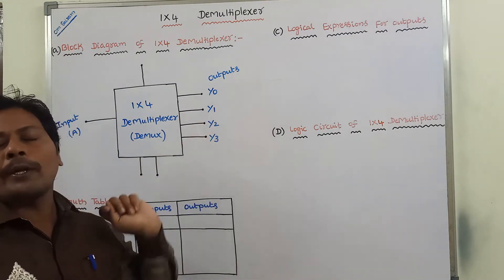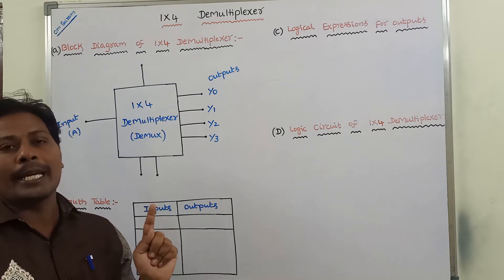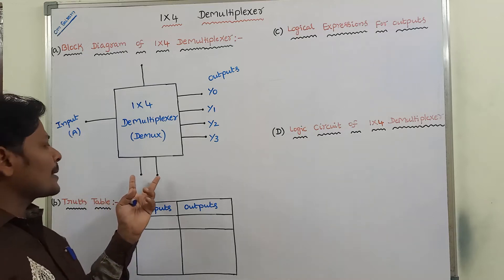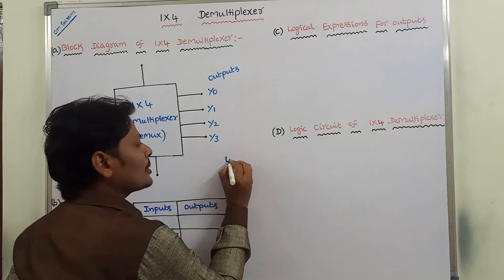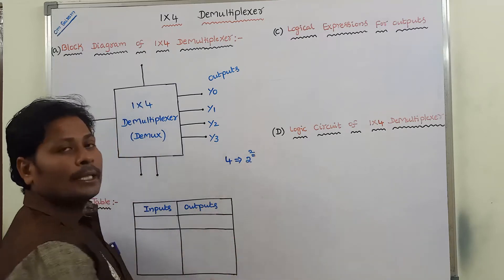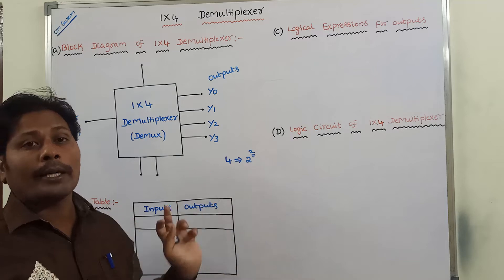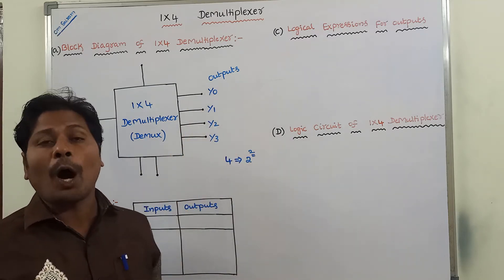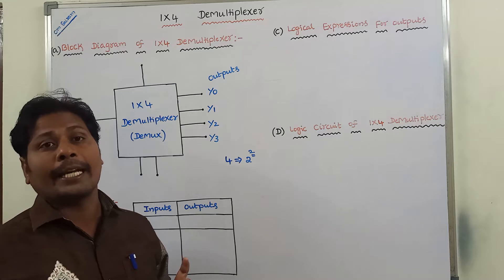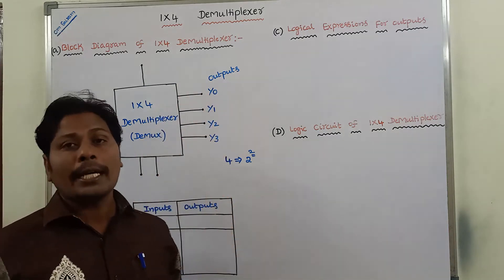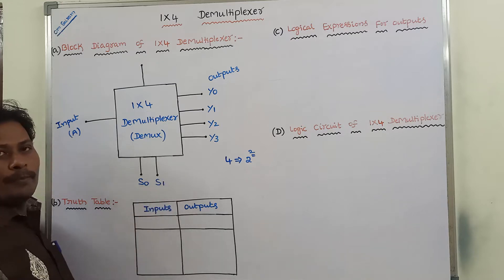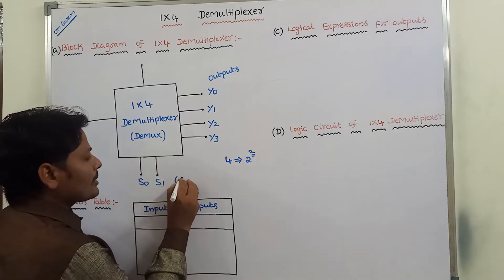Among these 4 outputs, only 1 output is selected. That 1 output is selected by using 2 selection lines. 4 outputs can be written as 2 power 2, so therefore 2 selection lines are required to select only 1 output among the 4 outputs. The 2 selection lines are S0 and S1, and these are called selection lines.